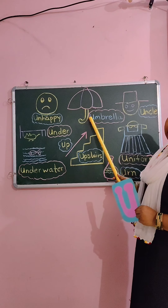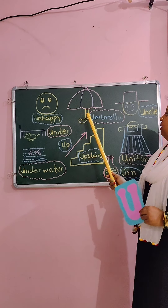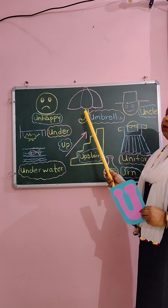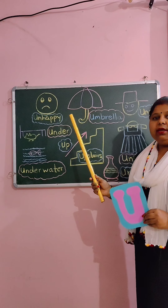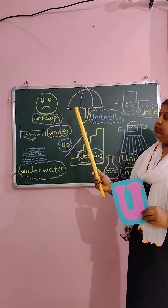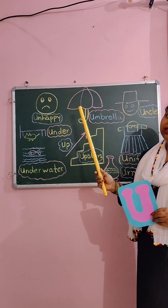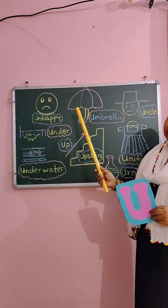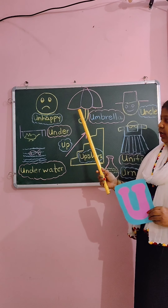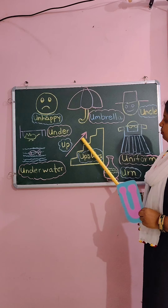U for umbrella. You all very well know about umbrella. Umbrella we use during rainy season. Jab hum baarish mein bahar jaate hai, umbrella leke jaate hai to save ourselves from rain.